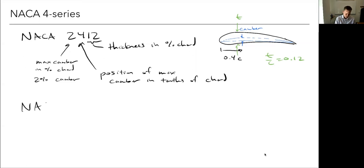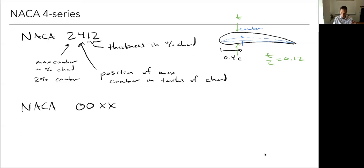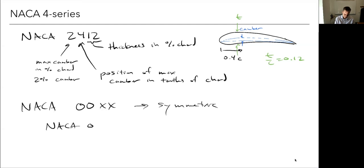Any NACA section with '00' as the first two digits means zero camber — it's a symmetric airfoil. For example, a NACA 0014 is a symmetric airfoil that's 14% thick. Again, these are not the best airfoils — they're just widely used. You'll see them referenced frequently, so you should know they exist and be familiar with what the digits mean.